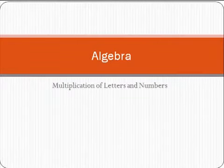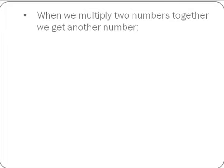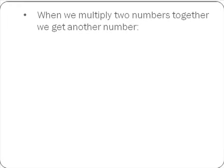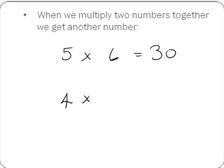Multiplication of letters and numbers. When we multiply two numbers together, we get another number. For example, 5 multiplied by 6 is equal to 30, and 4 multiplied by 3 is equal to 12.